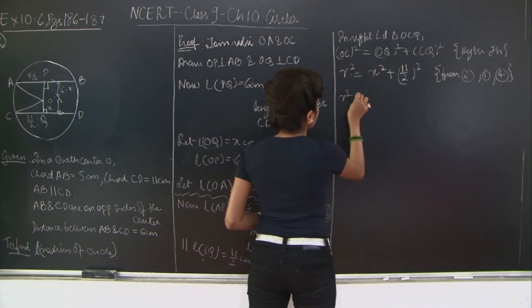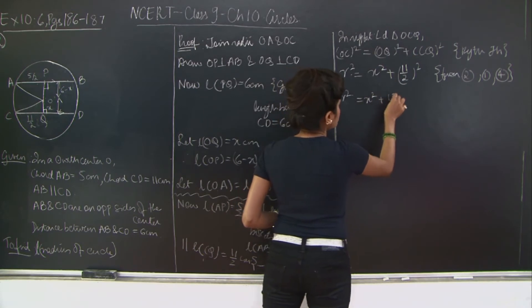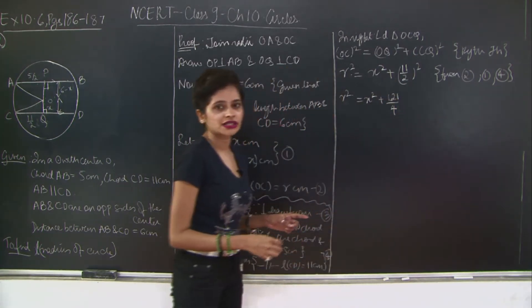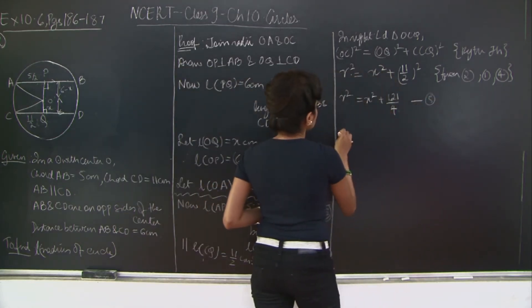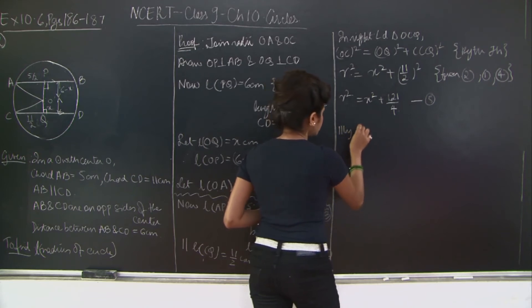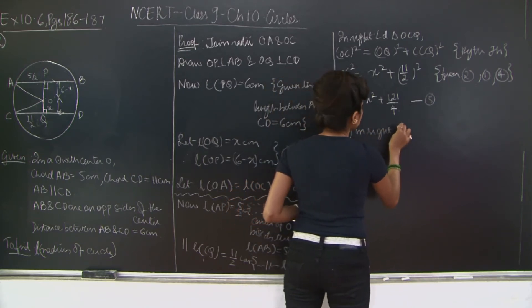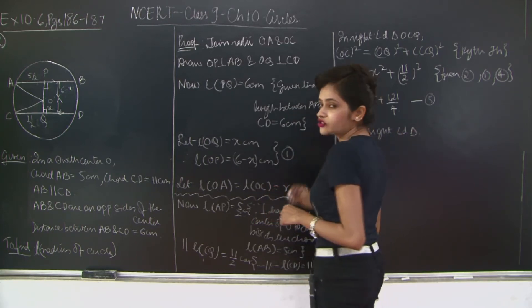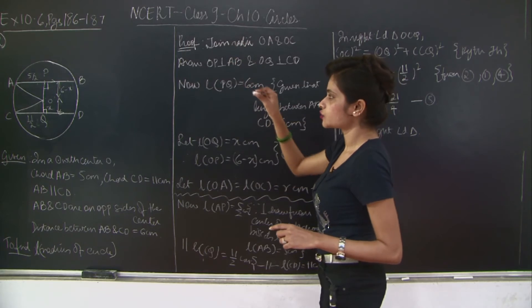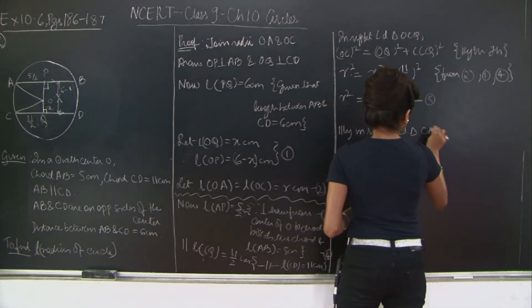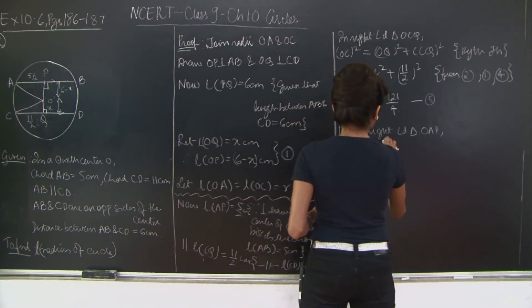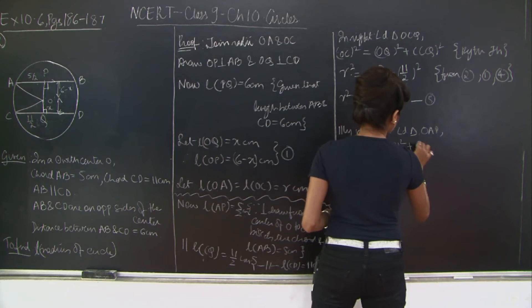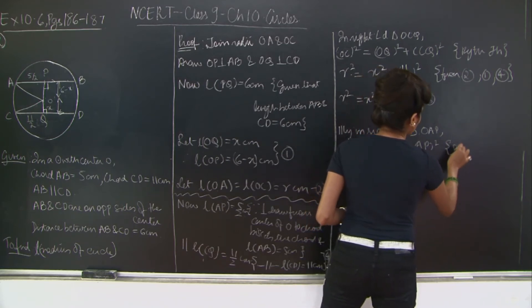Therefore R² = X² + 121/4. Let's mark this as equation 5. Similarly, in right-angled triangle OAP, by Pythagoras theorem: OA² = OP² + AP².